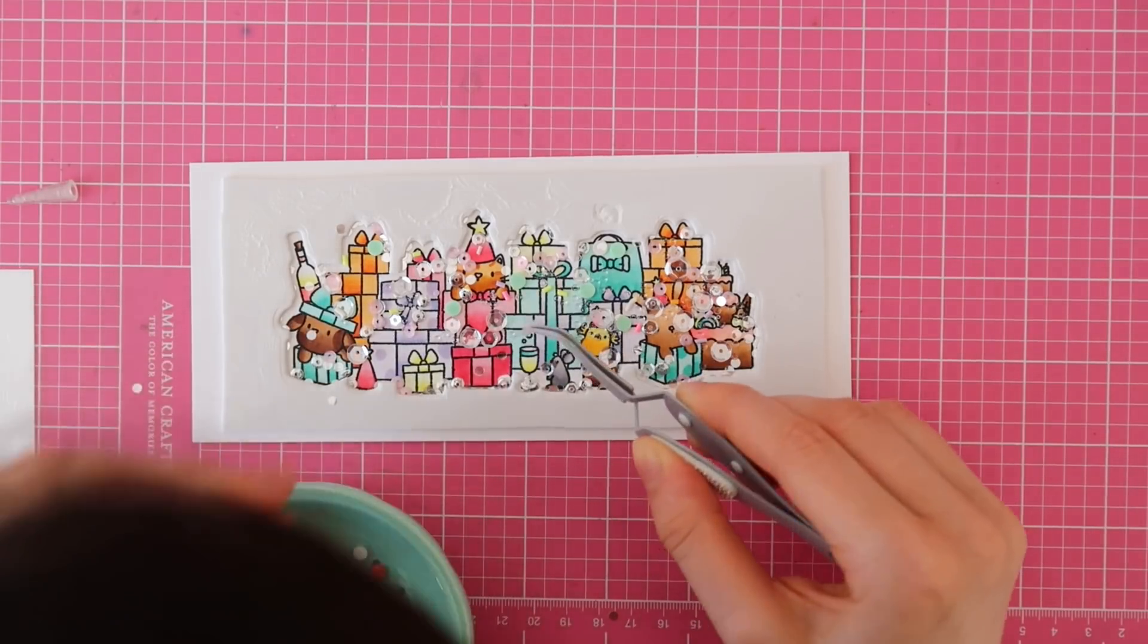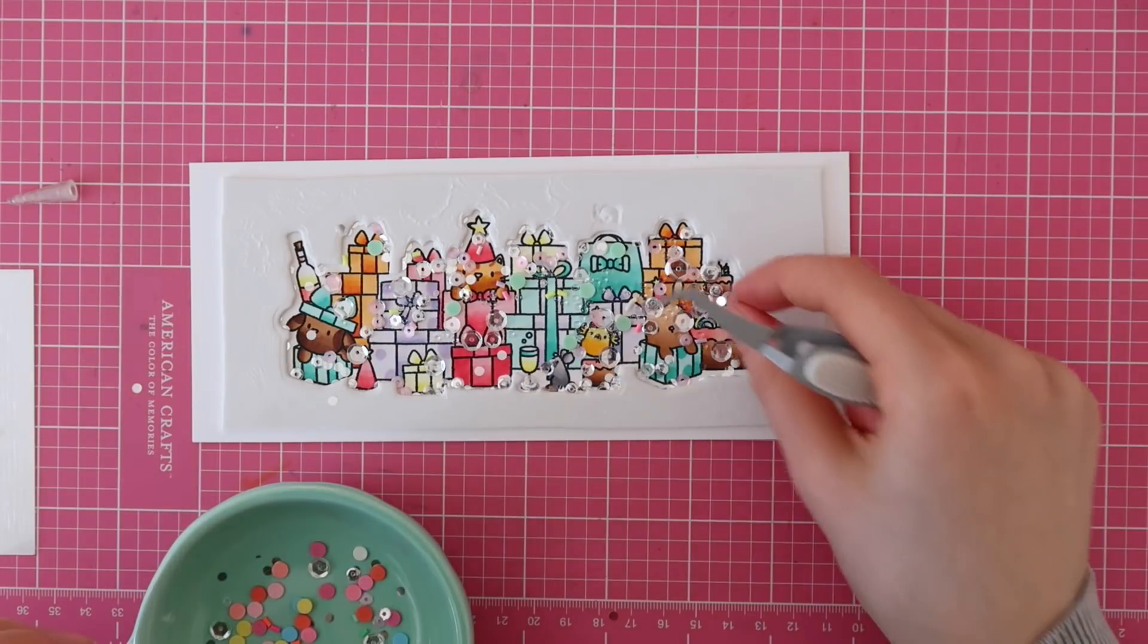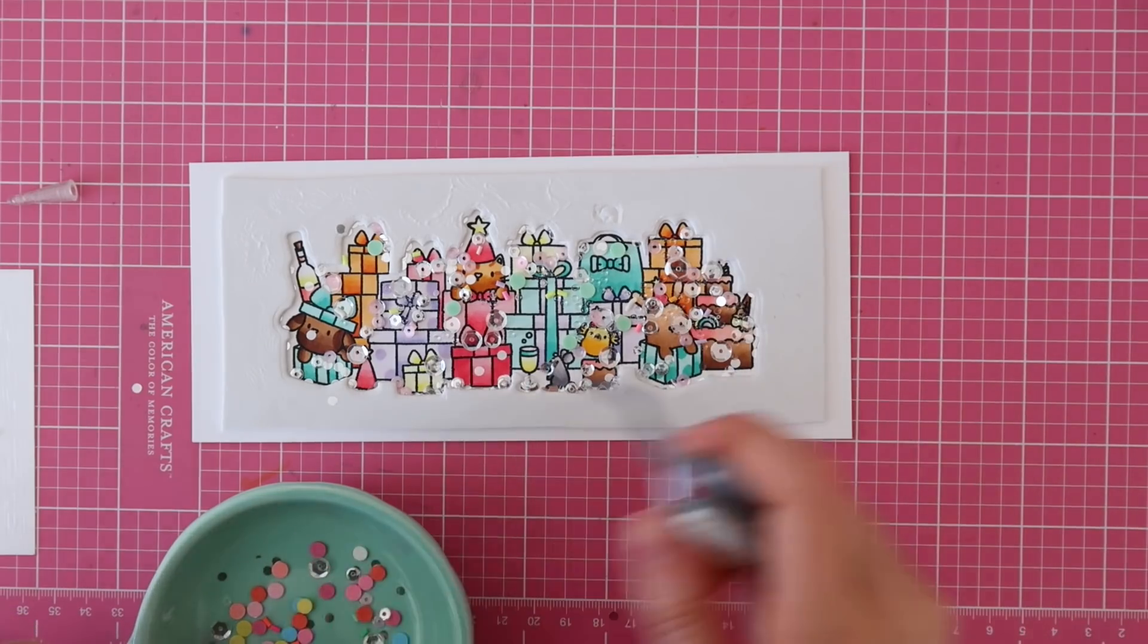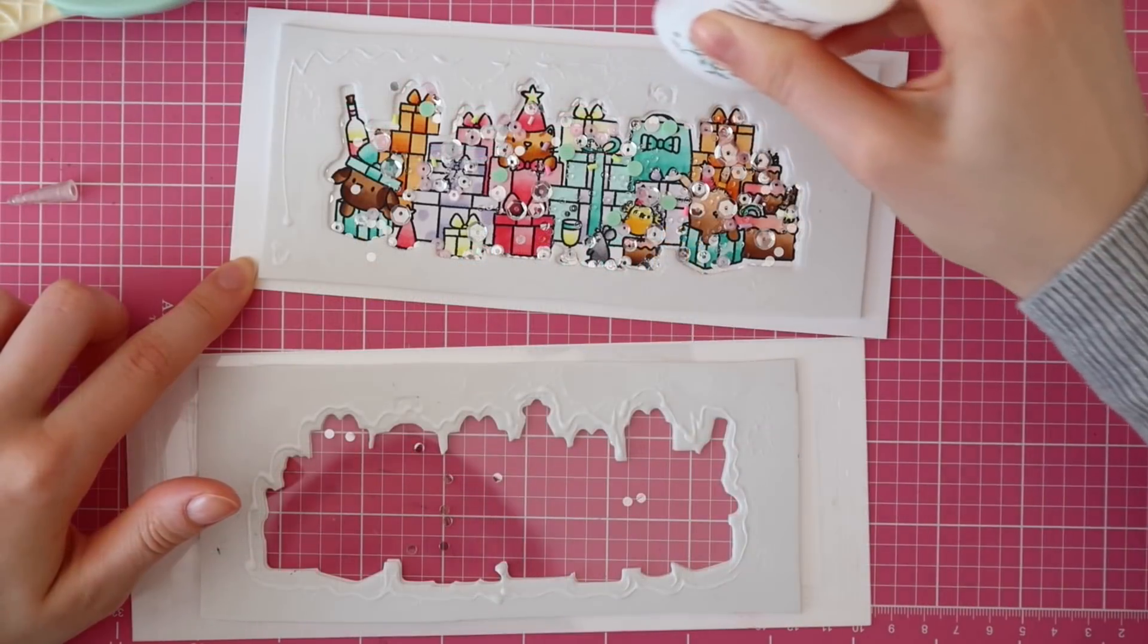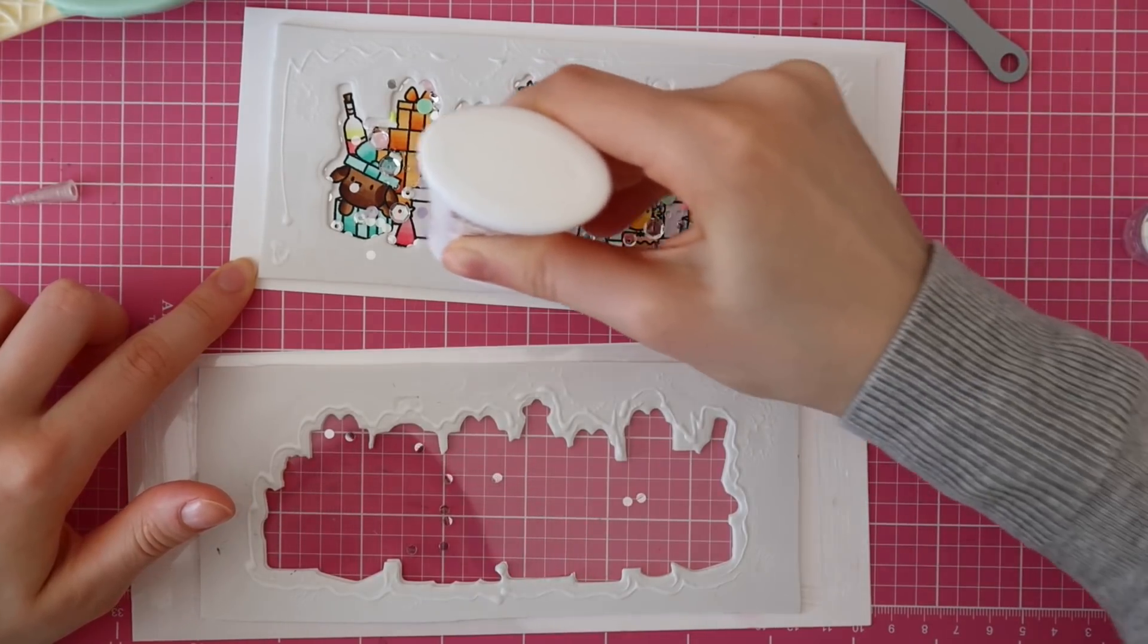There were too many sequins in there and you couldn't really see the image. So I opened up my shaker again. Thankfully the liquid glue was still wet, so I was still able to do that. And then I used my tweezers to pick out the sequins that were too much one by one.